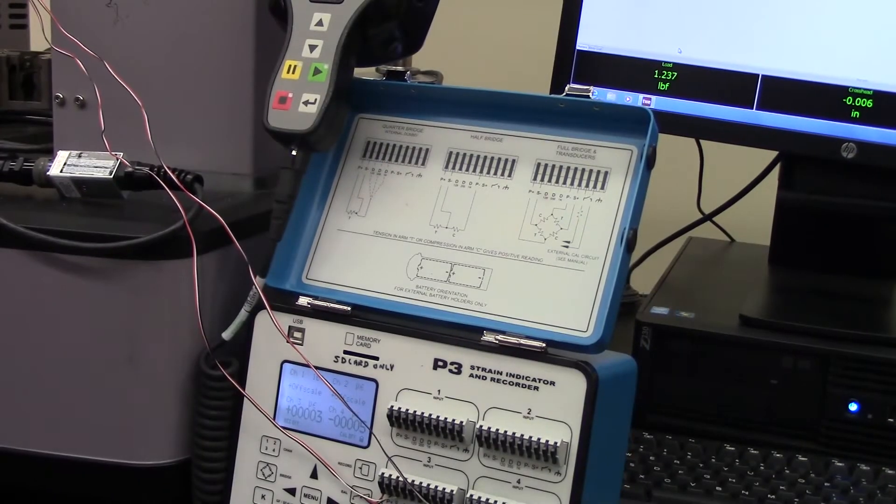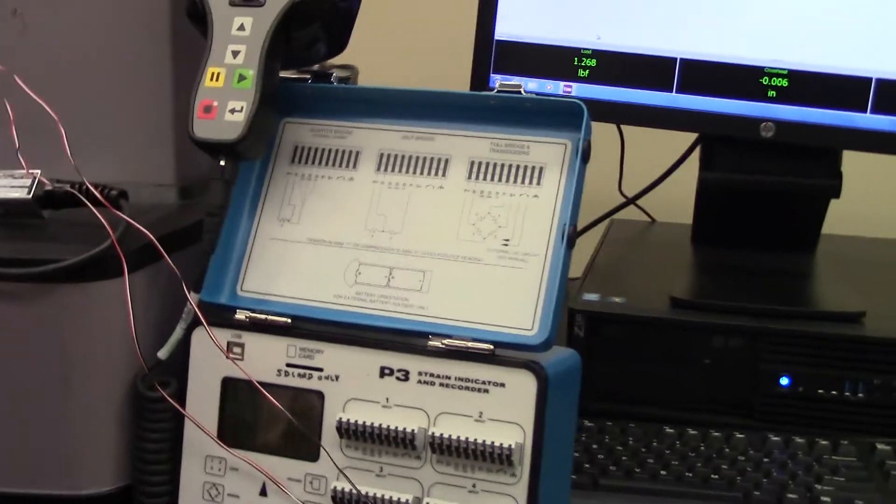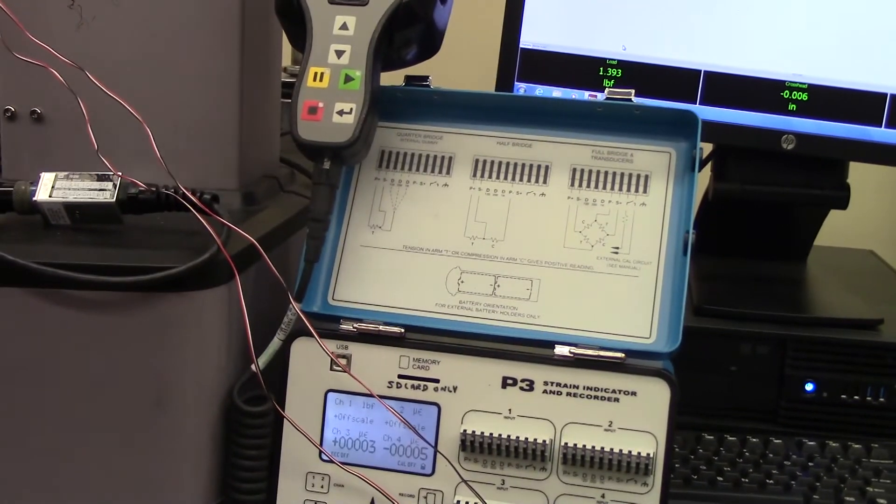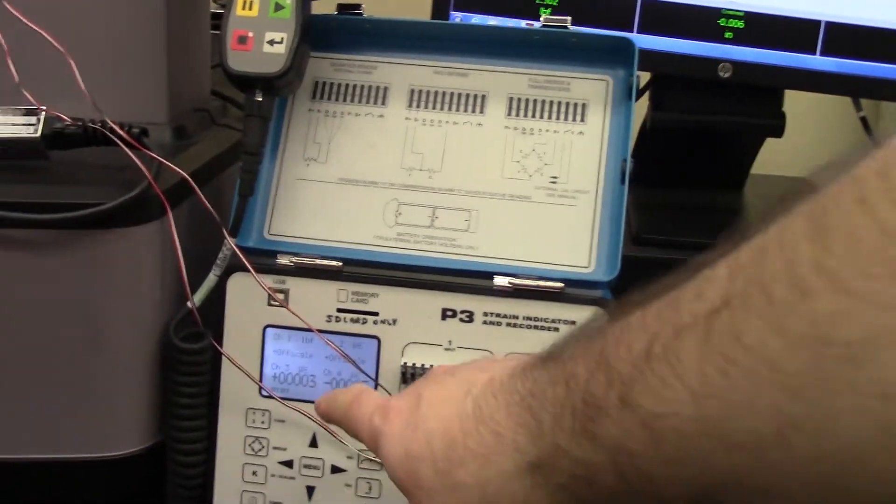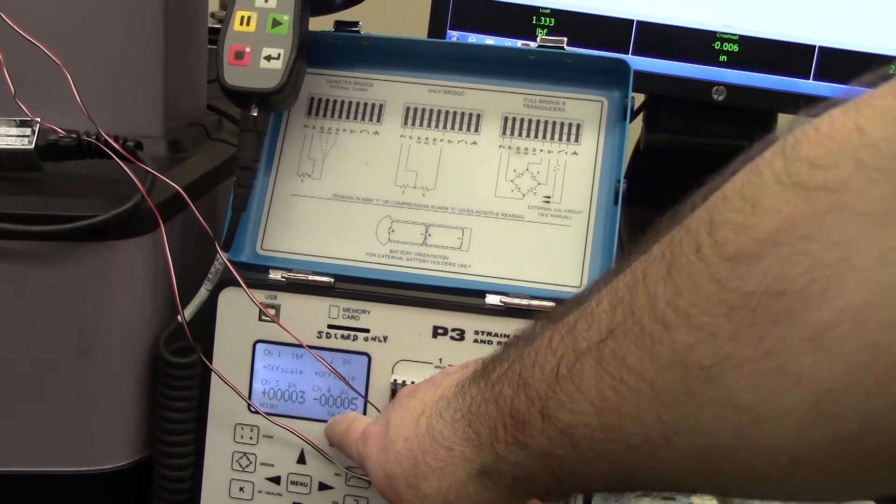We have our strain indicator. So the way these are set up, I think we decided that the one on the left is the transverse gauge and the one on the right is the axial gauge.